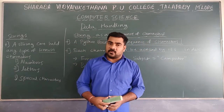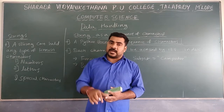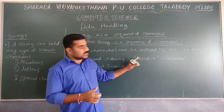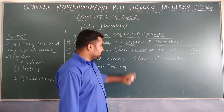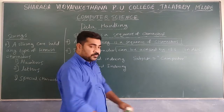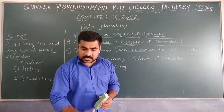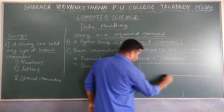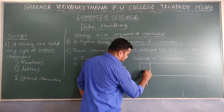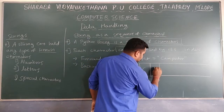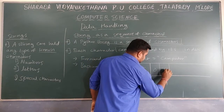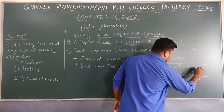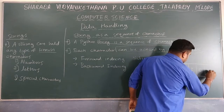Unlike other programming languages where single quotes mean a character and double quotes mean a string, in Python you can use either single or double quotes to assign a string value. When you assign the value, automatically it will create a memory space: first character C, next O, next M, next P, next U, then T, then E, and last R.